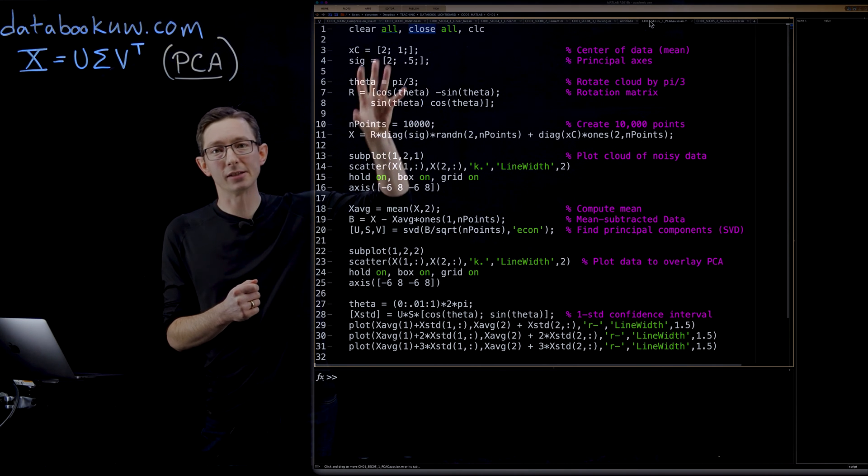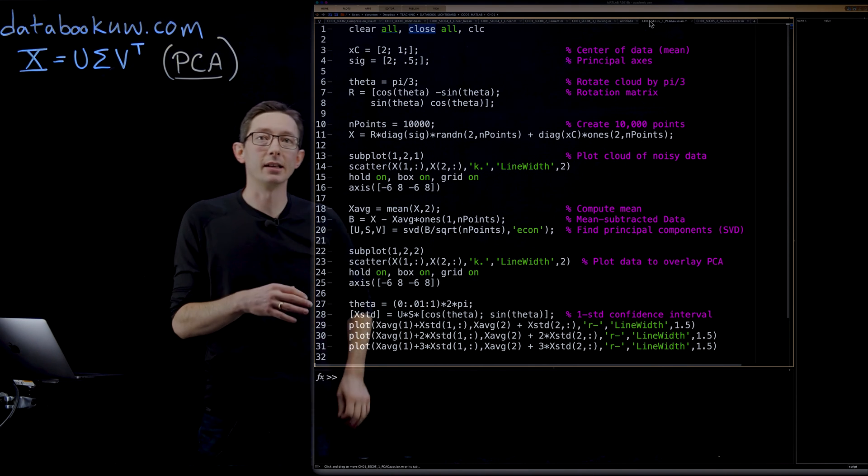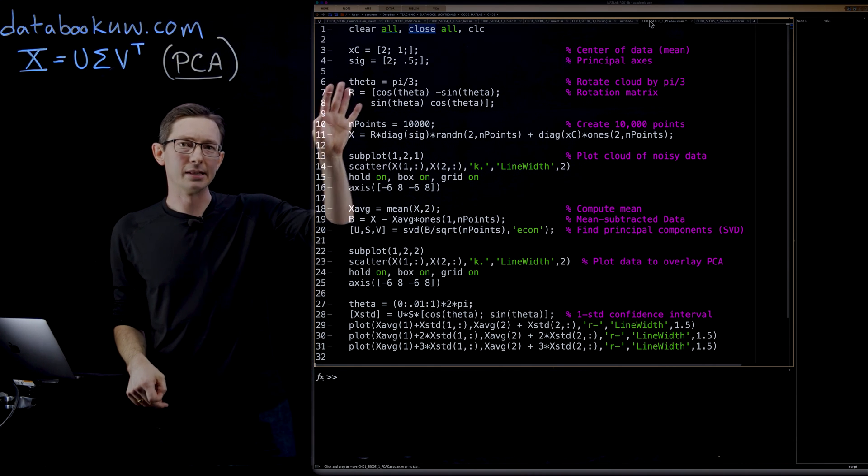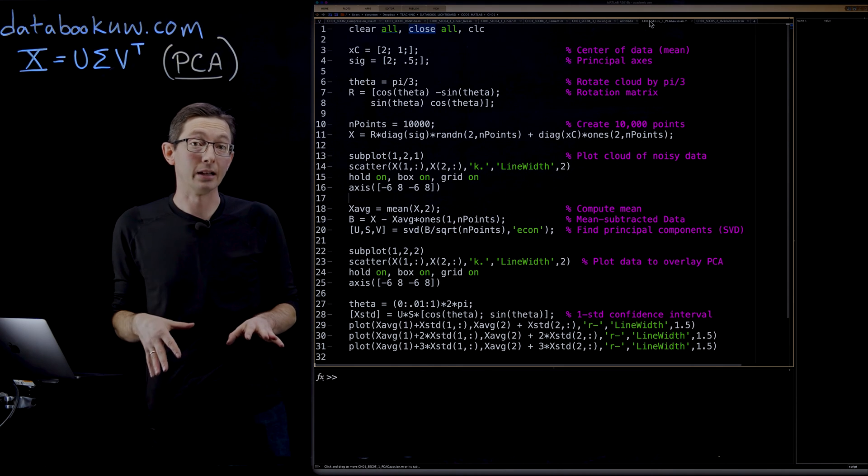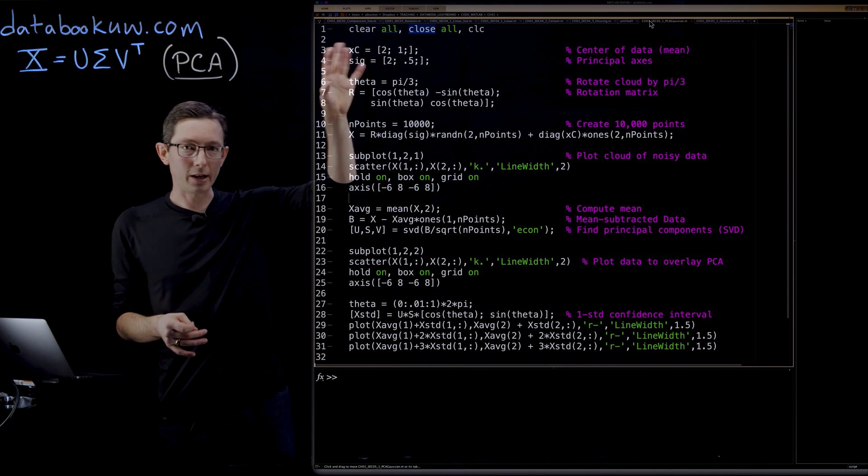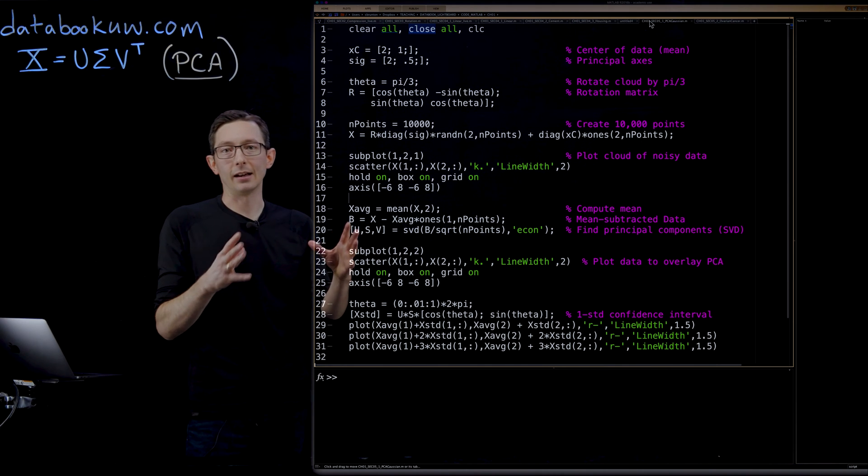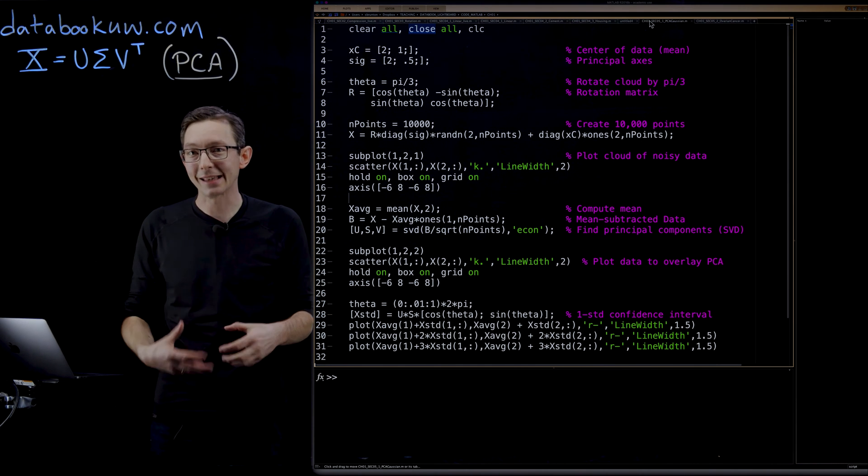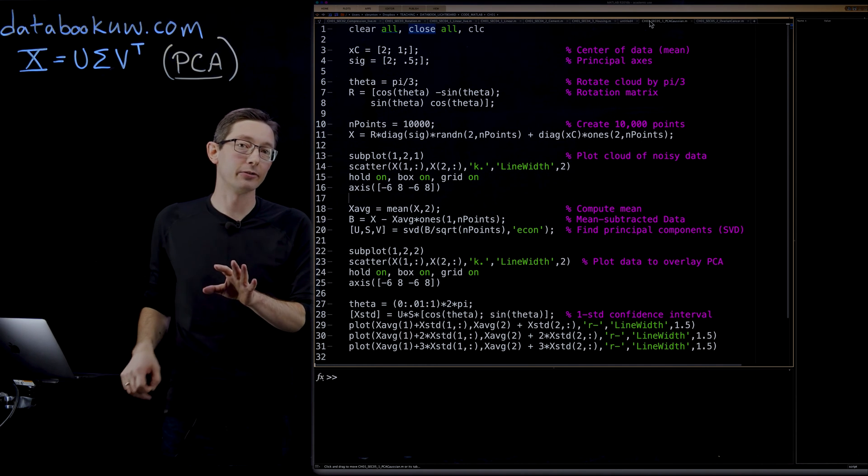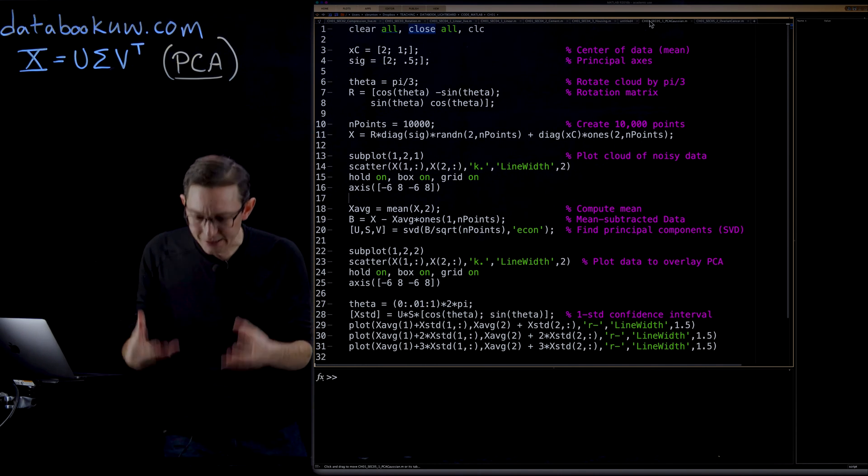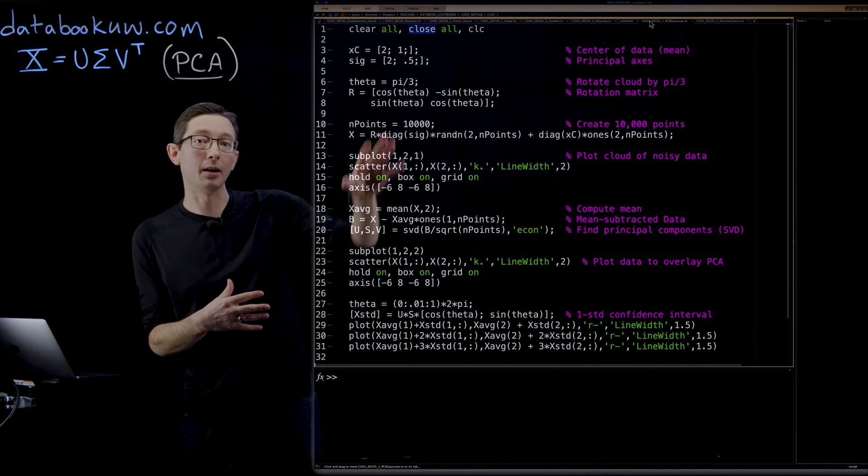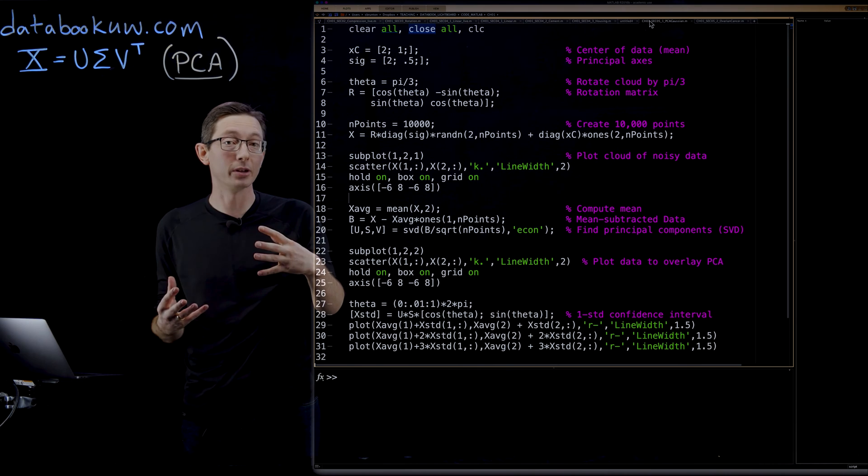In this first example, this is just a cooked up example. All the code is at databookuw.com. I believe this is all from section 1.5 of our book, Data-Driven Science and Engineering. Anytime you're going to test a mathematical tool like the SVD or PCA, it's a good idea to test it out on a system where you know the answer.